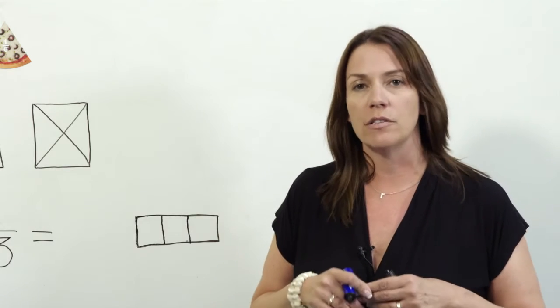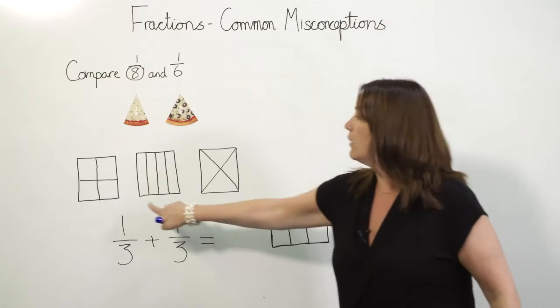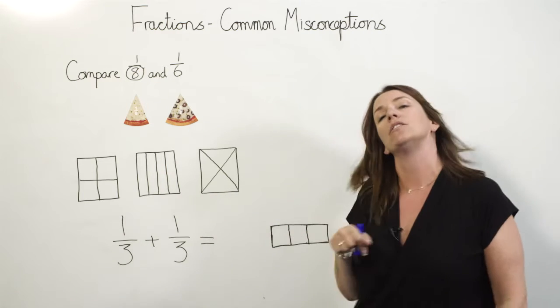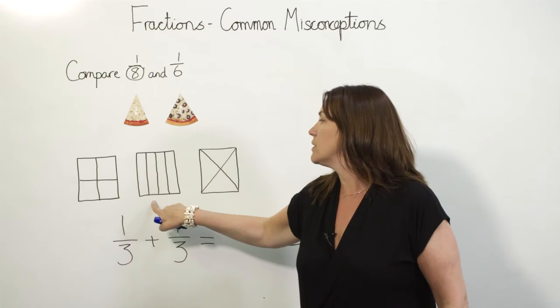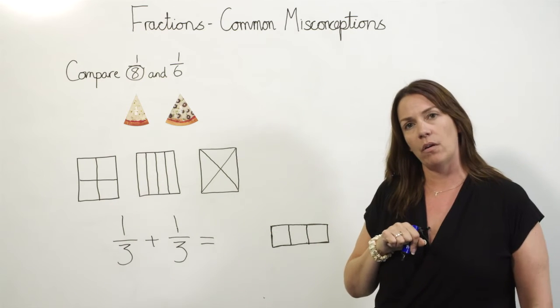And then we come on to fractions of shapes. Here we have three squares that are all divided into quarters, and many pupils make a misconception that the parts of the shape need to look the same in order to be the same size.